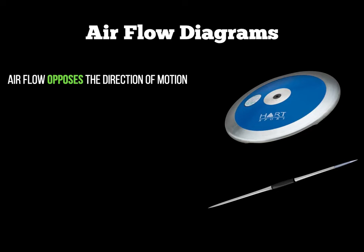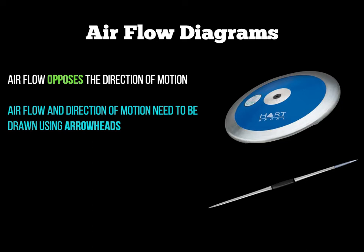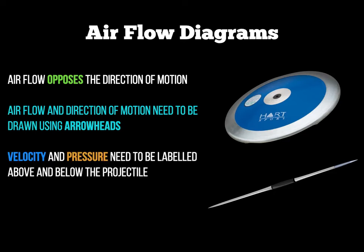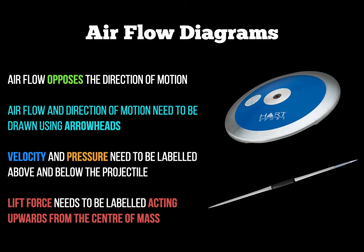In an air flow diagram you need to draw the air going over and under the object, and that opposes the direction of motion. So if an object is travelling one way, the air flow arrows must travel the opposite way. You must draw the air flow arrows using lines with arrowheads on them to show the direction of travel. You must include velocity and pressure, labelled above and below the object. Finally, you must label where the lift force is coming from and how much lift force is being applied.